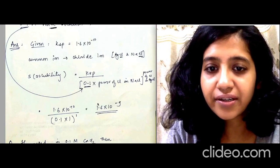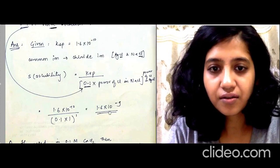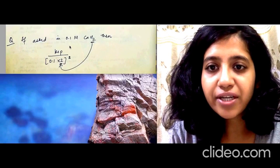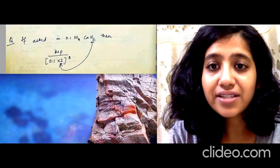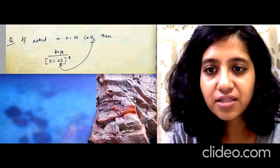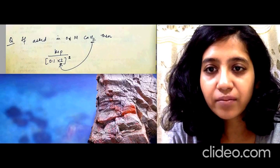So this gives you the answer 1.6×10⁻⁹. Let's say if they had asked the solubility of AgCl in 0.1 molar CaCl₂, then the only change will be Ksp divided by 0.1, because this is again 0.1.